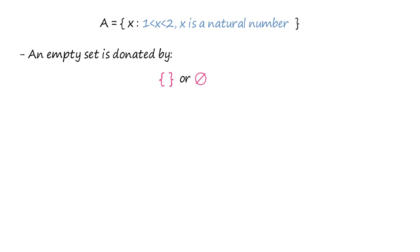Let's discuss a few more examples of empty set. The members of set B are the even prime numbers greater than 2. Since 2 is the only even prime number, B is an empty set.